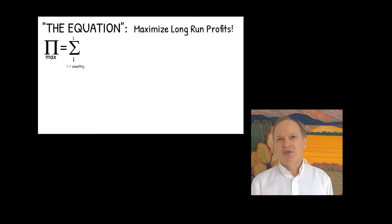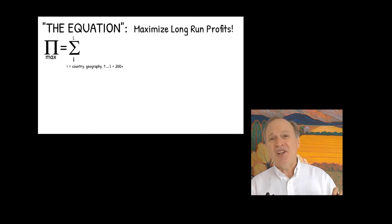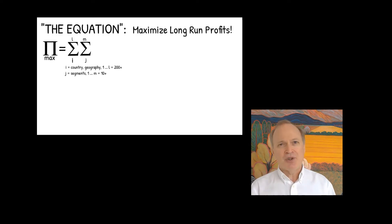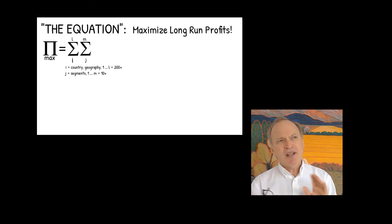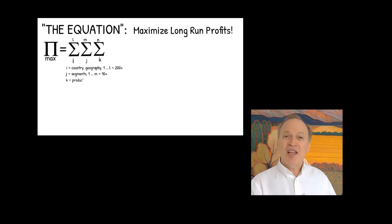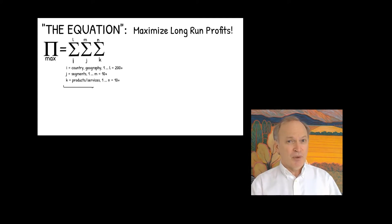Let's talk about this famous profit equation. Pi is the symbol I use for profit — we want to maximize profit. This profit equals three sigmas. The first sigma: I have to decide which countries or regions I want to compete in. The second sigma: just because I've decided to go into China doesn't mean I sell to everybody — I have to decide which segments to target, maybe four to ten segments. The third sigma: just because I target teenagers doesn't mean I sell everything to them — I have to decide what products or services to offer those segments. This is called the portfolio.